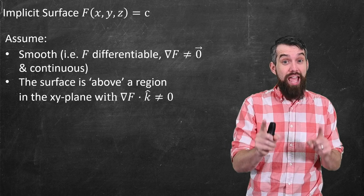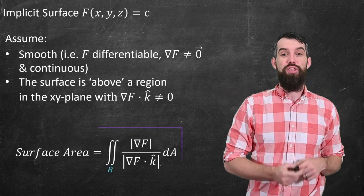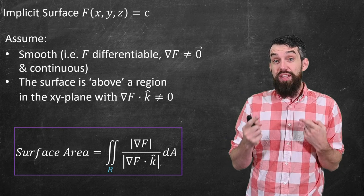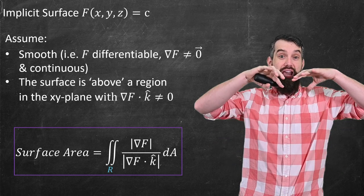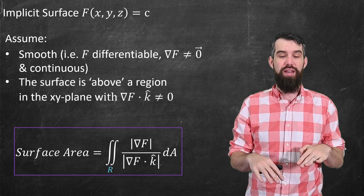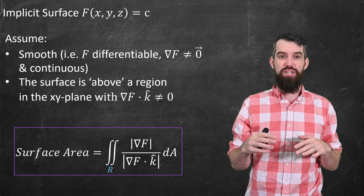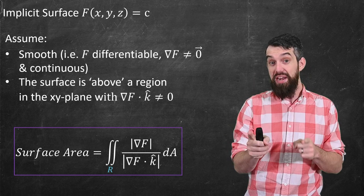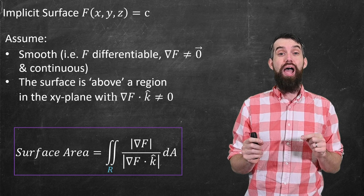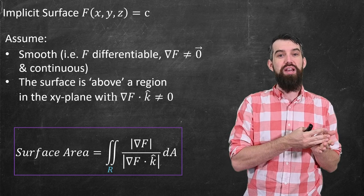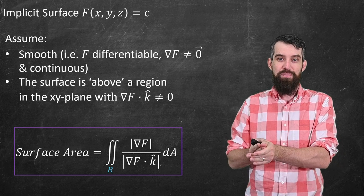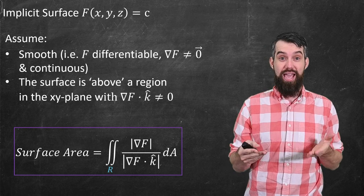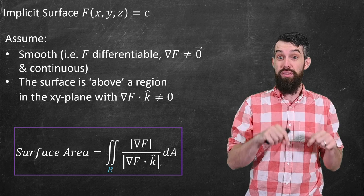Okay so given those two assumptions then we get our formula. Here it is. The surface area is the double integral over a region in the xy plane. So it's saying that I'm above a region in the xy plane. I can take an integral with respect to area in the xy plane, so a dxdy. And then my integrand is the magnitude of the gradient of F divided by the magnitude of the gradient of F dotted with k hat. And notice here in our formula how important it was that the gradient of F dotted with k hat was non-zero because that's down in the denominator.